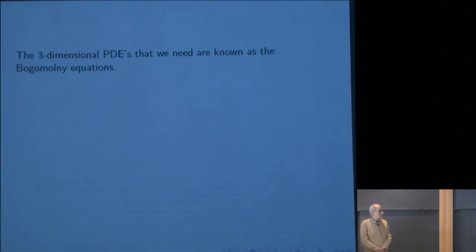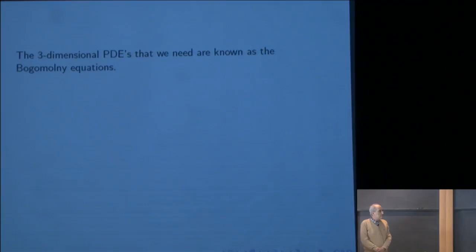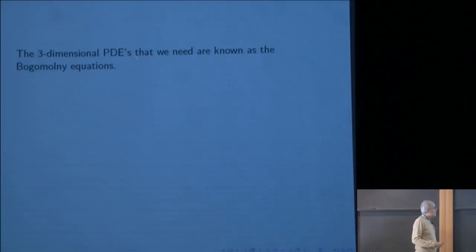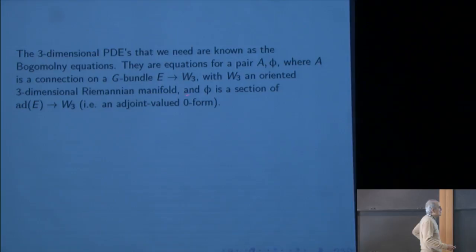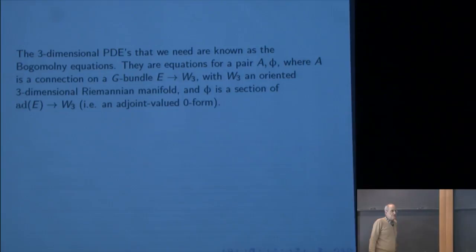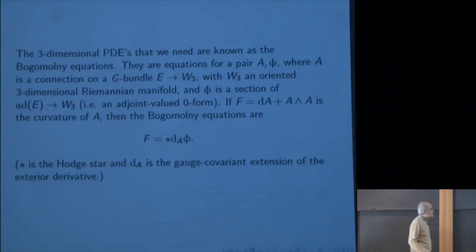The three-dimensional PDEs that we need are known as the Bogomolny equations. These are equations for a pair (A, φ), where A is a connection on a G bundle over a 3-manifold W^3, and φ is a section of the corresponding adjoint bundle — an adjoint-valued zero-form. If F is the curvature of A, then the Bogomolny equations are *F = D_A φ, where * is the Hodge star and D_A is the gauge-covariant exterior derivative. These are elliptic differential equations modulo the gauge group. Their solutions are called monopoles.